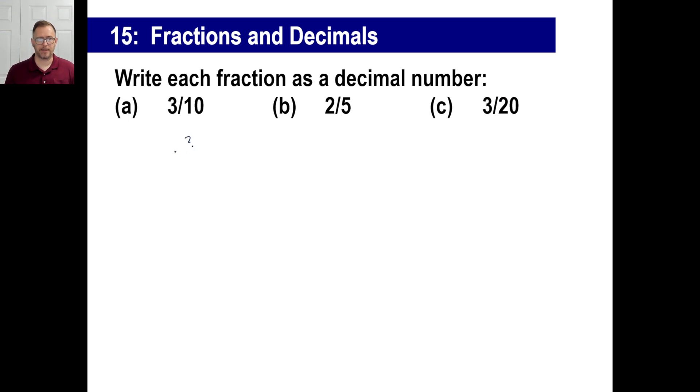Of course, if you did this, you would get 0.3. If you did this, we did it already. That's going to be 0.4. 3 over 20 would be 0.15. And there you go. All fractions are division problems. To get the decimal, do the division. That's all you've got to do.